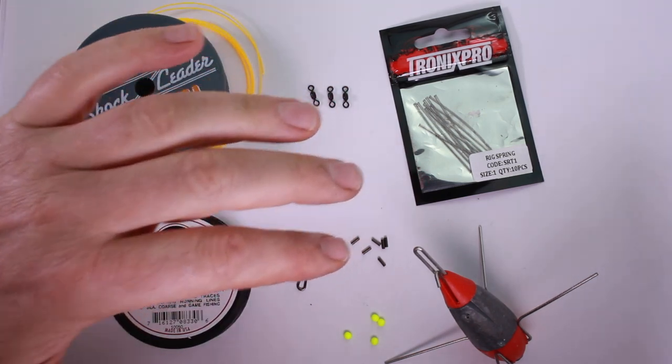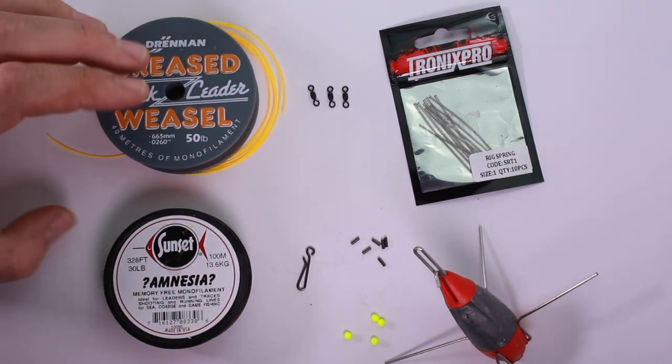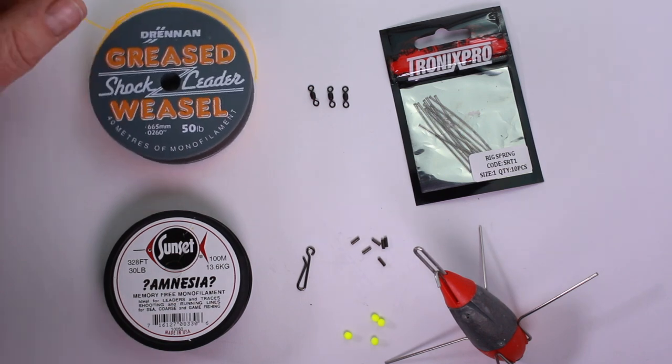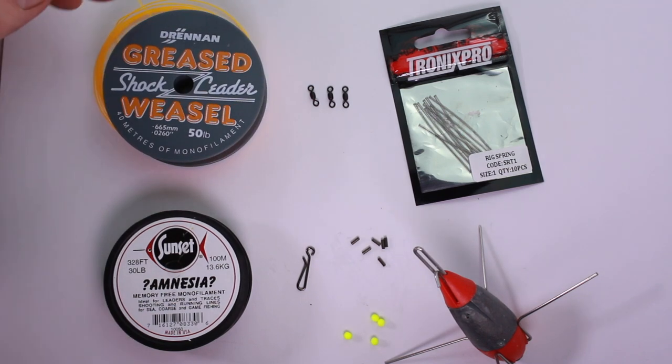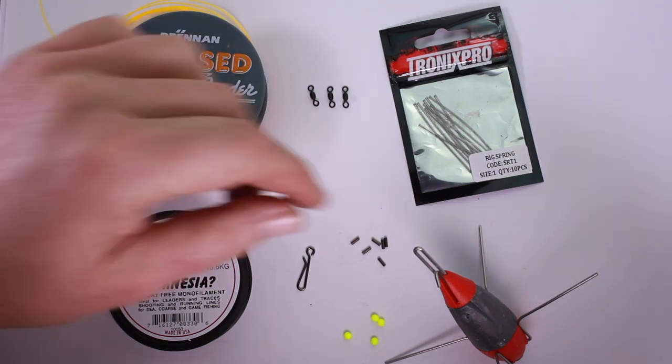Terminal tackle wise you've got your rig clips there, beads. I'm going to use this shock leader, 50 pound shock leader but it's in yellow. I'd use the grey one but this shows up a little bit better on the camera.